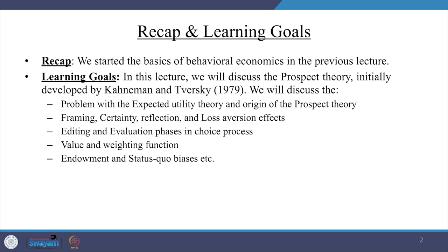I am recapping what we did and what we are targeting to do. We started the basics of behavioral economics in the previous lecture and here we will discuss more on prospect theory, initially developed by Kahneman and Tversky in 1979. We will also emphasize the problems with expected utility theory and the origin of framing, certainty, reflection, and loss aversion effects, and we will talk about editing and evaluation phases in the choice process. We will also discuss value and weighting functions and the endowment and status quo biases attached to existing theories.